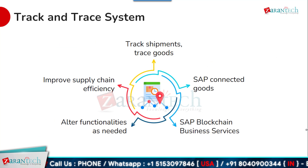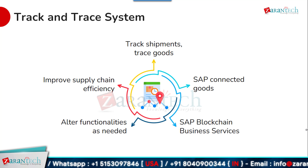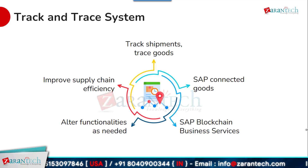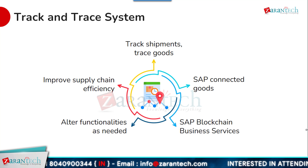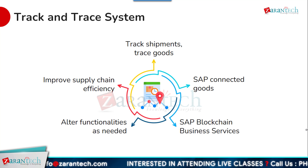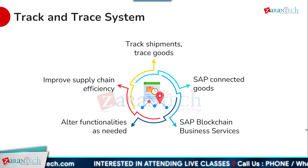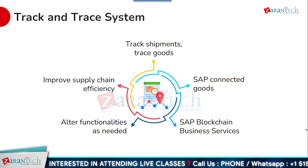Here we can see the track and trace system in SAP Digital Transformation. SAP BTP enables organizations to track shipments and trace goods throughout the supply chain. SAP Connected Goods provides visibility into the movement of goods, while SAP Blockchain Business Services ensures the integrity and security of supply chain data. Organizations can alter functionalities to meet their specific requirements. By leveraging SAP BTP's track and trace capabilities, organizations can improve supply chain efficiency and respond quickly to any issues that arise.